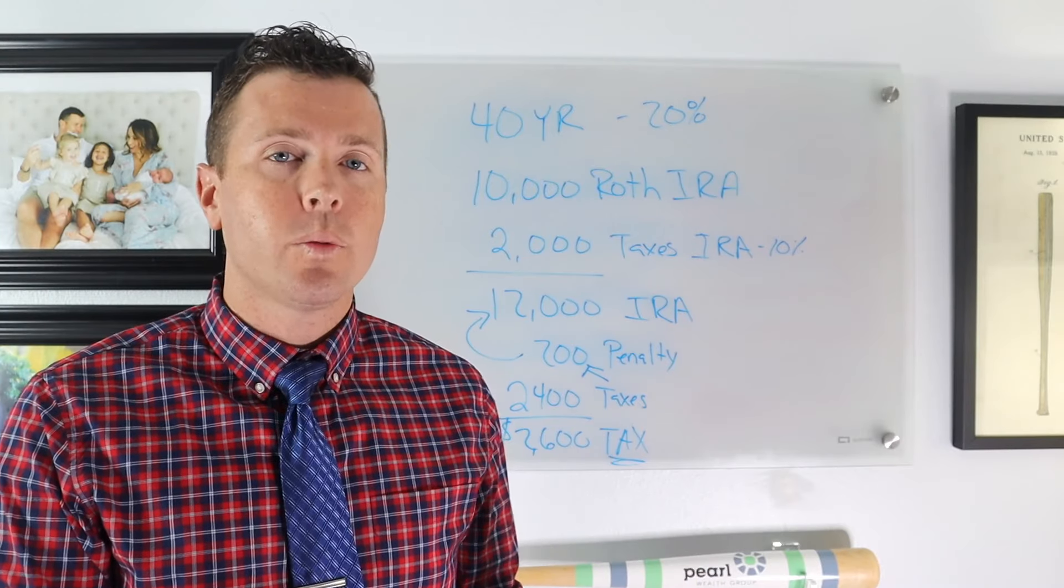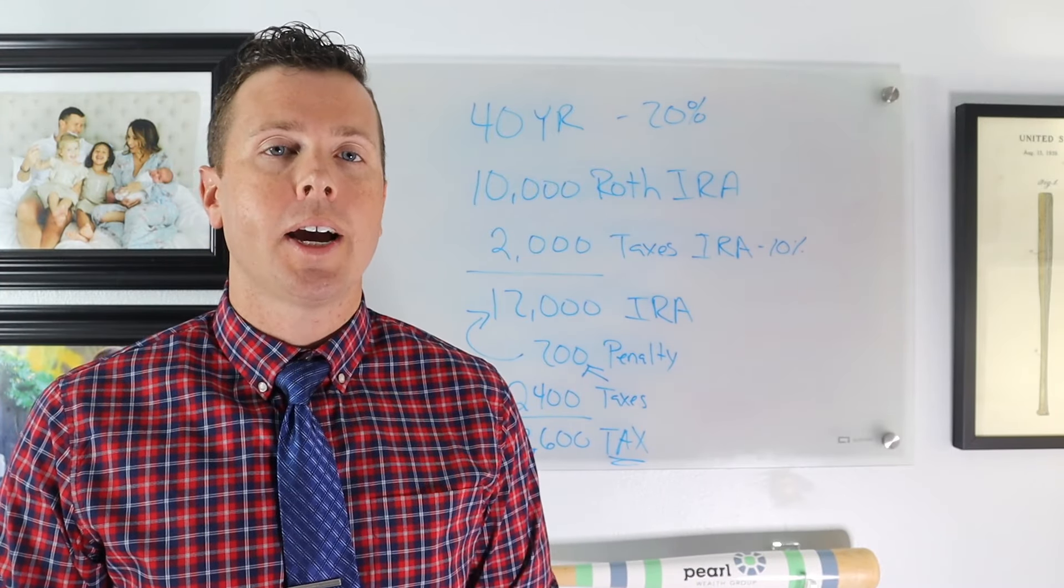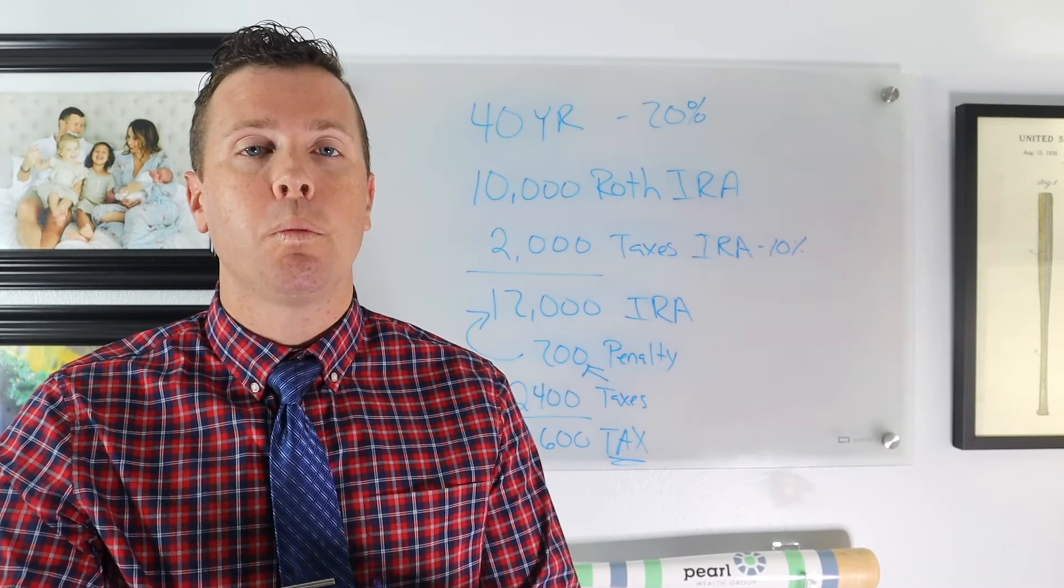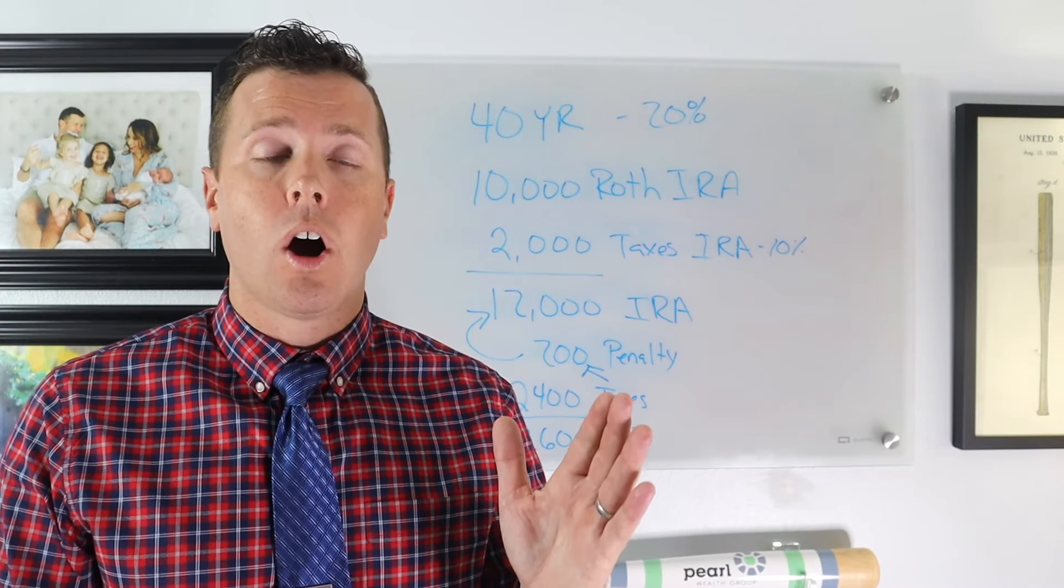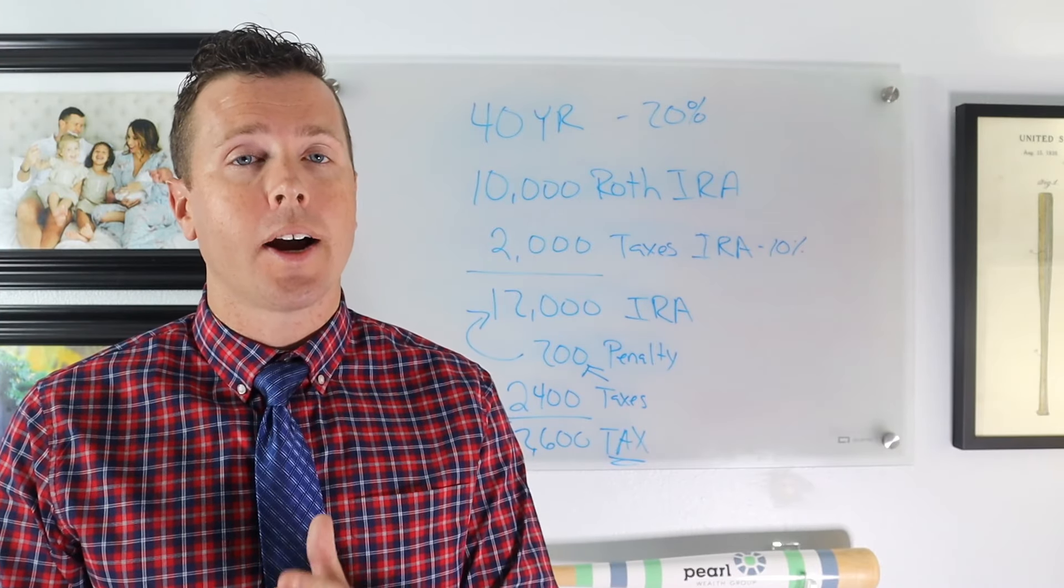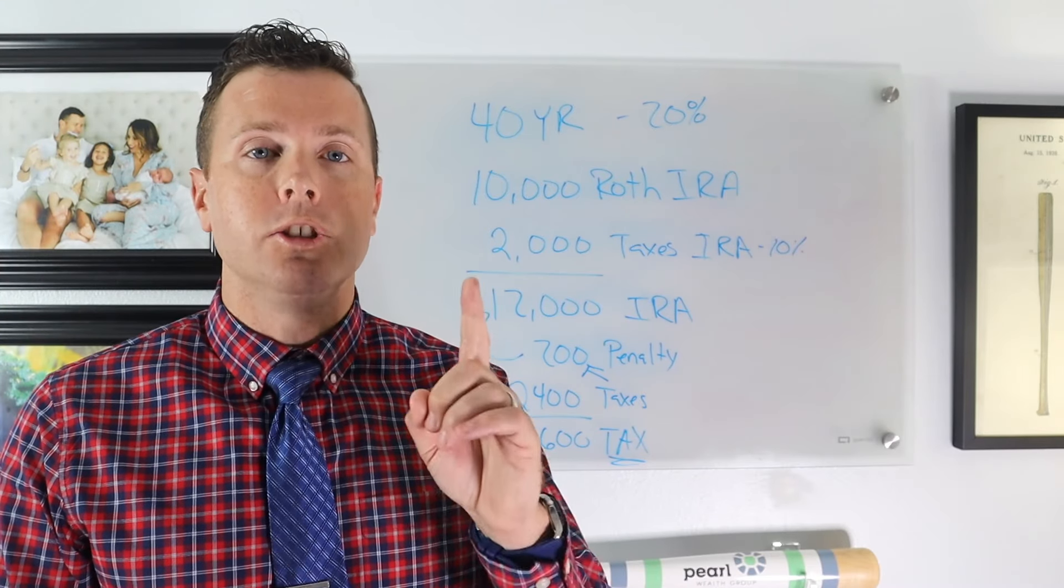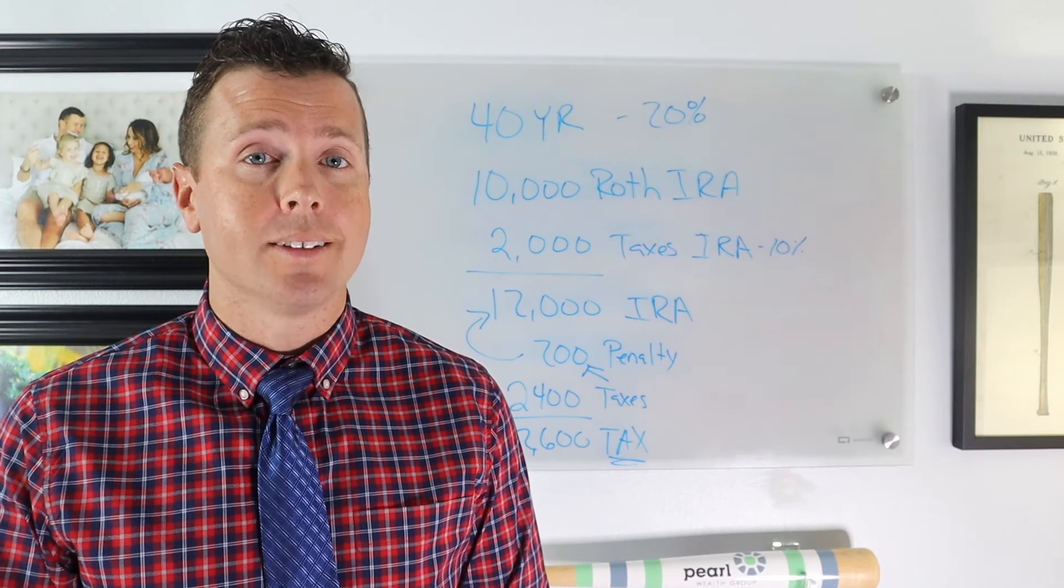So when you're doing an IRA to a Roth IRA conversion, please make sure you have the cash on hand, whether in a bank account or in a taxable brokerage account that you can use to pay the taxes on your IRA to Roth IRA conversion. Especially if you're under the age of 59 and a half, do not use your IRA to pay your Roth IRA taxes.